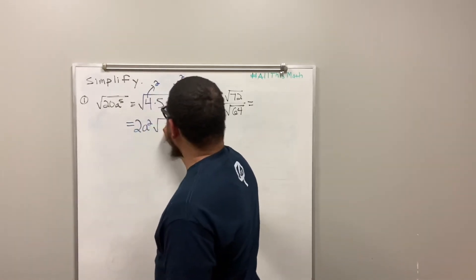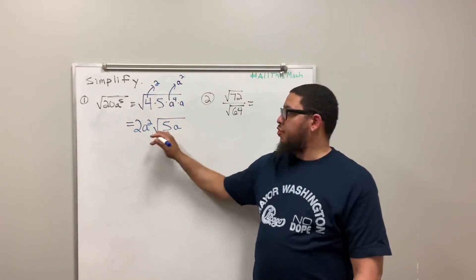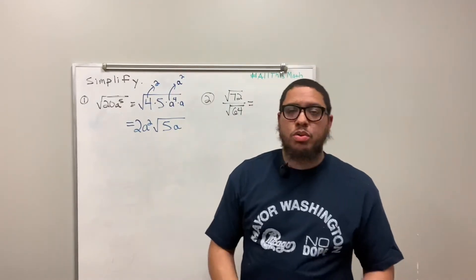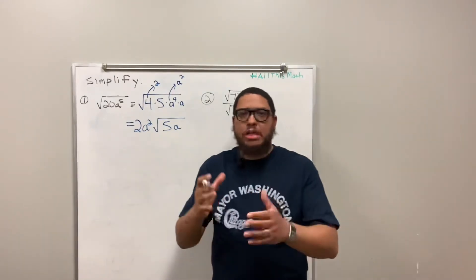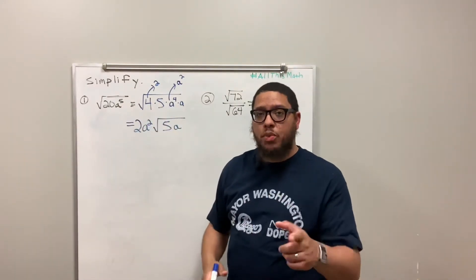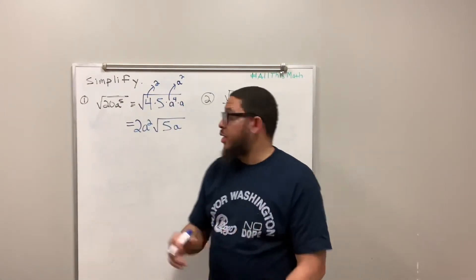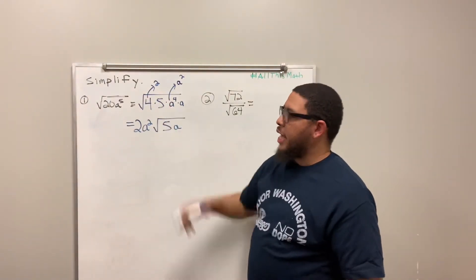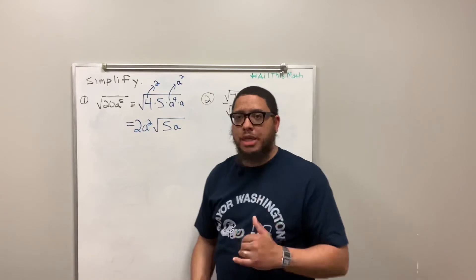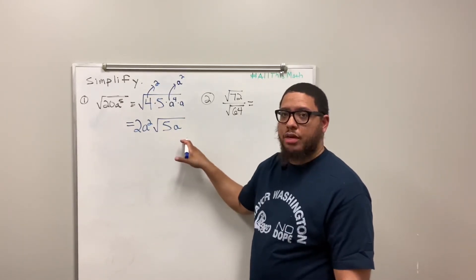What's left inside? The 5 and the a. There's nothing you can do with them. The 2 came out, the a squared came out. The 5a stays in. So when simplifying radicals, you look for perfect squares. If you don't have perfect squares, you break the numbers down into parts where one part is a perfect square. You want to use the biggest even-numbered exponent you possibly can. Our final answer is 2a squared root 5a.